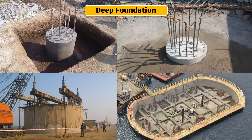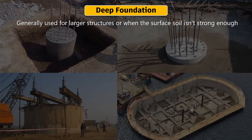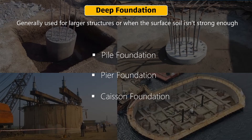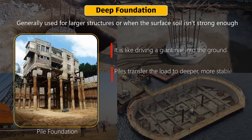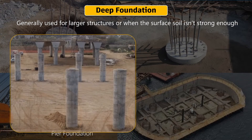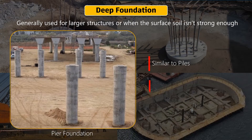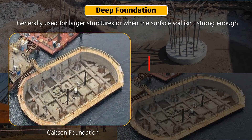Now let us move to deep foundations, which are used for larger structures or when surface soil isn't strong enough. Deep foundations include pile foundation, pier foundation, and caisson foundation. For pile foundation, think of it like driving a giant nail into the ground — piles transfer the load to deeper and more stable soil layers, and are suitable for tall buildings, bridges, and marine structures where upper soil layers are weak or compressible. Pier foundation is similar to piles, but piers are installed by digging holes and filling them with concrete. Caisson foundation is used for underwater structures — caissons are watertight structures that go deep into the bedrock.